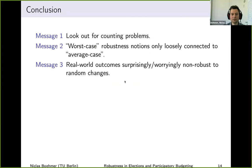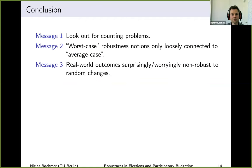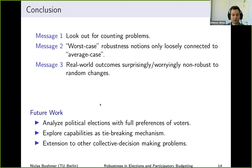To sum up, I've hopefully conveyed three messages. First, look out for counting problems — they are fun theoretically and sometimes capture reality better than decision problems. Second, worst-case robustness notions typically have only a loose connection to the average case or to random changes. Third, in different types of instances and settings, outcomes are sometimes surprisingly non-robust to random changes — even to the extent that we were quite surprised.